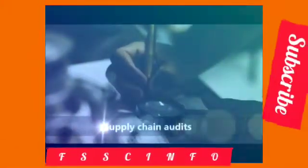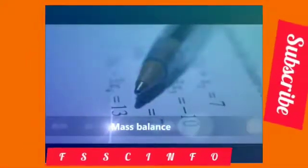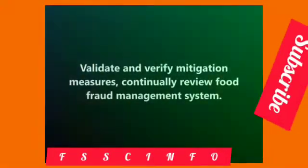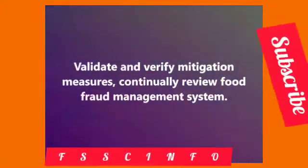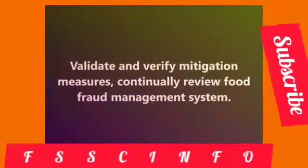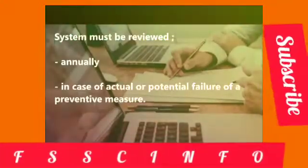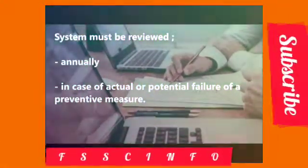Supply chain audits should include potential for fraud, adulteration, traceability, and mass balance tests at critical points in the supply chain. Step three: validate and verify mitigation measures and continually review the food fraud management system. The system must be reviewed annually, as well as in case of actual or potential failure of a preventive measure.